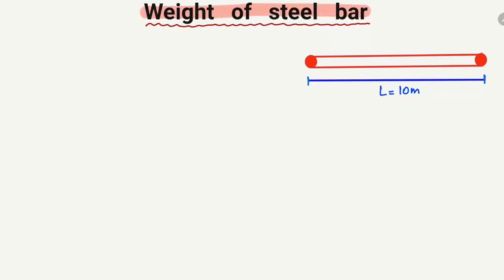There is a very simple, easy trick to find out the weight of any steel bar. For example, we are going to take a steel bar with a length of 10 meters and a diameter of 12 millimeters. Now, how do we find out the weight of the steel bar?